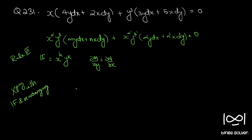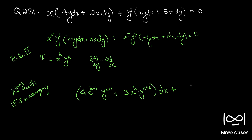After multiplying and collecting dx and dy terms: M = 4·x^(h+1)·y^(k+1) + 3·x^h·y^(k+4), and N = 2·x^(h+2)·y^k + 5·x^(h+1)·y^(k+3). So the equation becomes [4x^(h+1)y^(k+1) + 3x^h·y^(k+4)] dx + [2x^(h+2)y^k + 5x^(h+1)y^(k+3)] dy = 0.